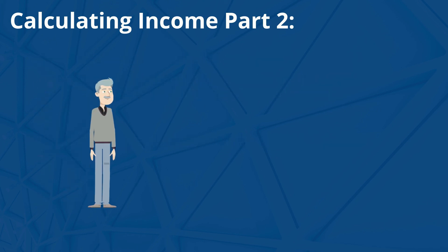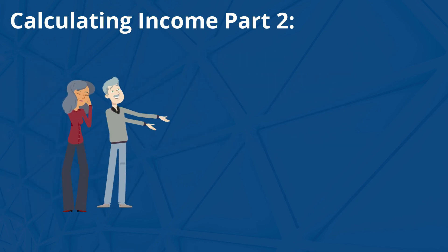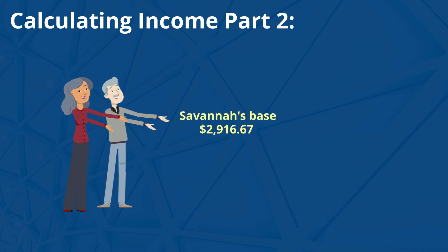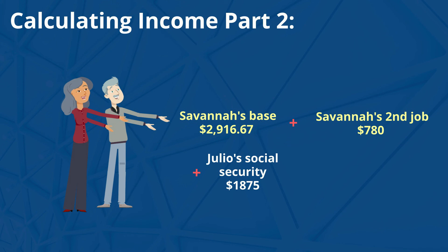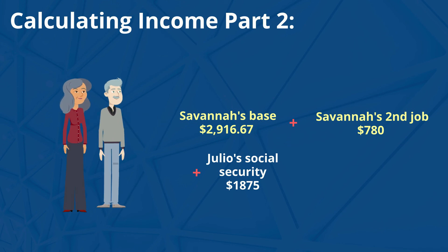Now let's add all of them together. Savannah's base income of $2,916.67 plus her second job income of $780 plus Julio's Social Security grossed up of $1,875 is equal to $5,571.67 for their total monthly income.